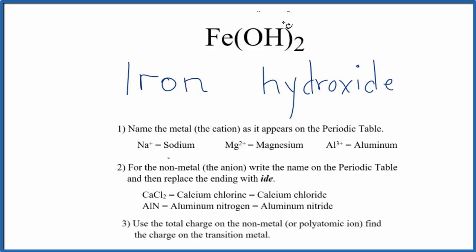So the hydroxide ion is always one minus, and we have two of them. So in order for this to all add up to zero, the iron has to be two plus.